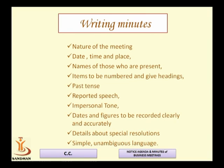The heading must indicate whether it is a general meeting, a board meeting, or a yearly financial meeting. That is called the nature of the meeting — which type of meeting it was. Second is the date, time, and place. The date, time, and place at which the meeting was held should be mentioned.